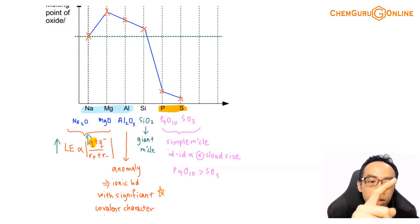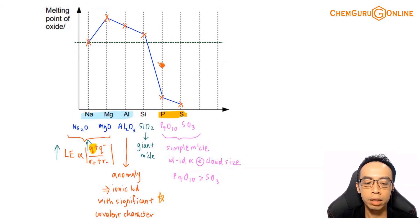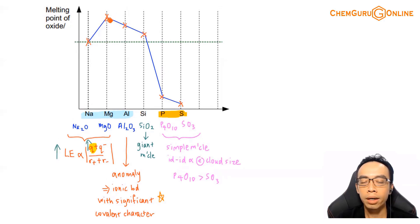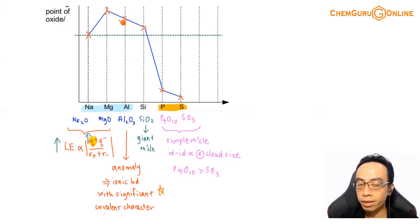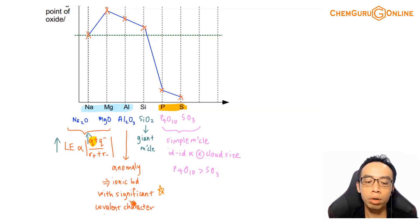We would expect the melting point to increase all the way, but interestingly Al₂O₃'s melting point starts to come down. So the melting point for magnesium oxide in this set happens to be the highest. Al₂O₃ comes down, and there's an anomaly in the melting point for this ionic compound. Later we will use ionic bond with significant covalent character to try to explain that.